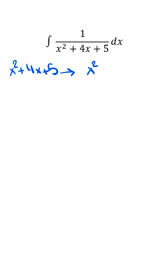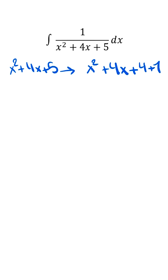x squared plus 4x plus, instead of 5, we write 4 plus 1. We complete this square, so we're going to have x plus 2 to the second power plus 1.